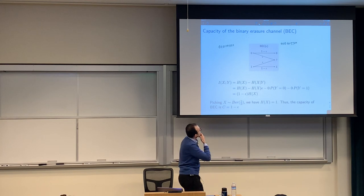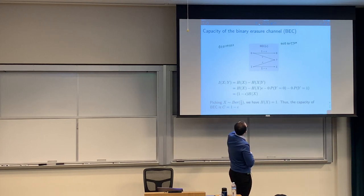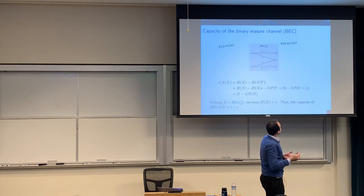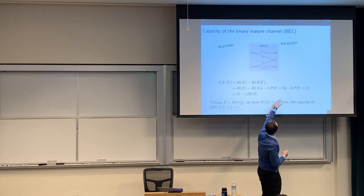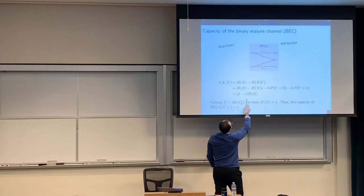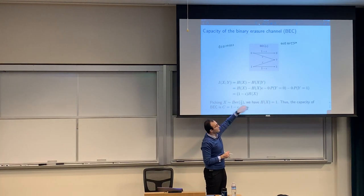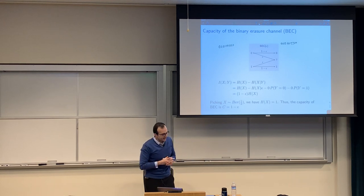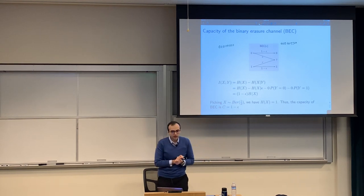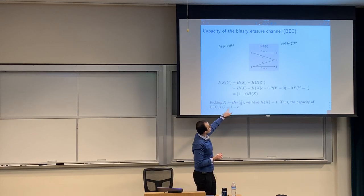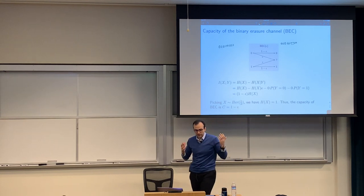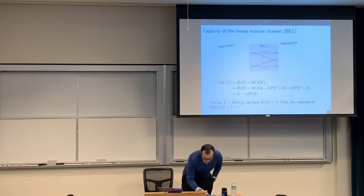If you look at the mutual information between X and Y using the conditional entropy definition, you see that when Y is observed, how much the uncertainty on X is reduced: there are three options. If the bit is not erased, there is no uncertainty — that term is zero. If it is erased, the full uncertainty remains. So the mutual information reduces to (1 − ε) · H(X). To maximize this over the input distribution, you pick the input uniform, which is Bernoulli(1/2). That maximizes mutual information and tells you that the capacity of the binary erasure channel is 1 − ε.